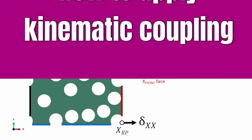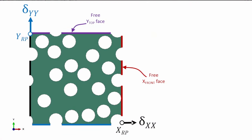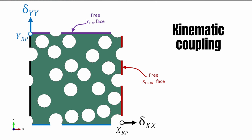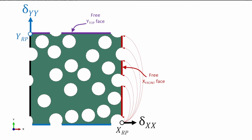How do we translate the loading applied at a corner to the surfaces so we get homogeneous deformation of the front and top surfaces? This leads to the idea of kinematic coupling — we link the behavior of the reference point to everything on those faces using a canonical equation. For the X front edge, the equation states: displacement of the X front edge in direction 1, minus displacement of the reference node in direction 1, equals zero — meaning they are physically equal. The same applies to the top edge in the 2 direction.